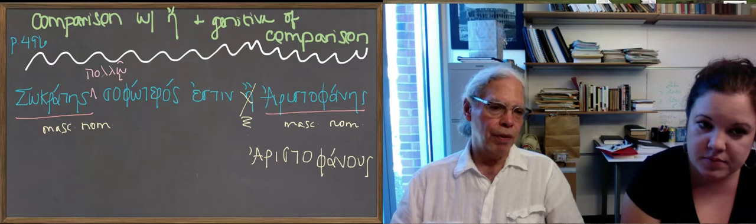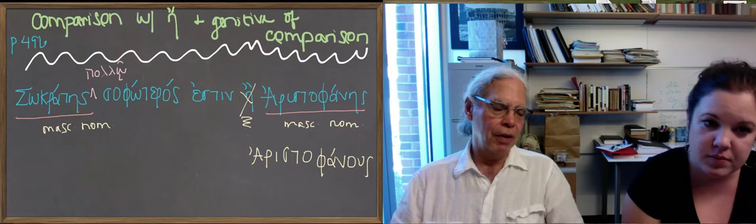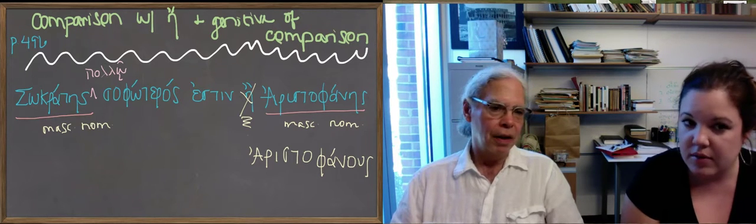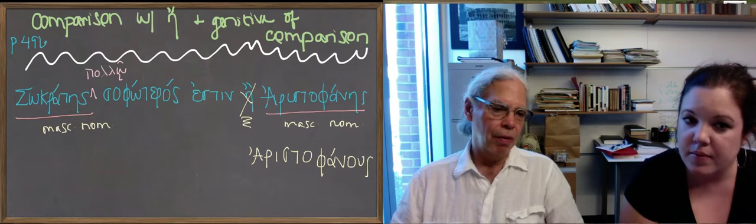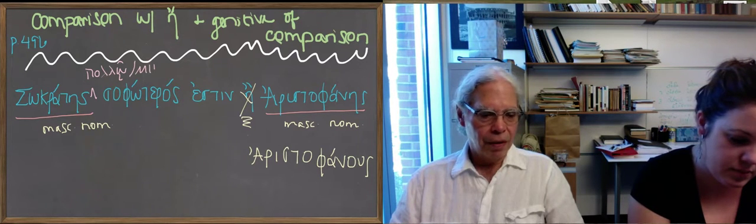You put the word for a lot, which is a form of polus in the neuter, in the dative case. And if it's a little, it would be micro, the word for a little is in this lesson.